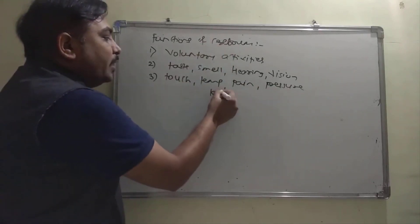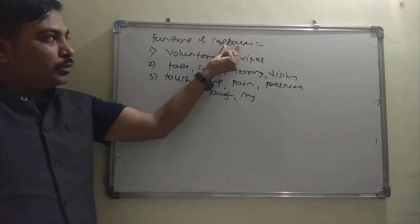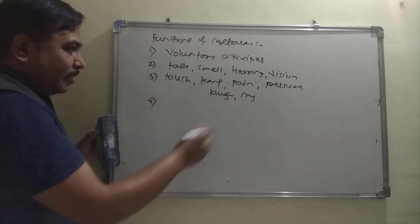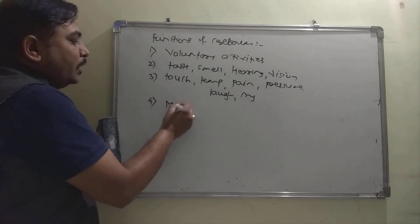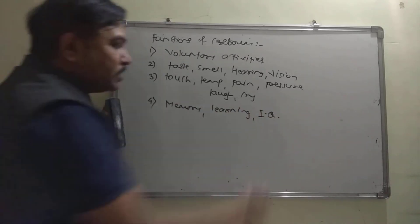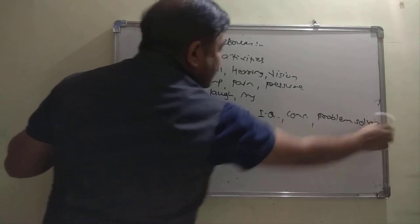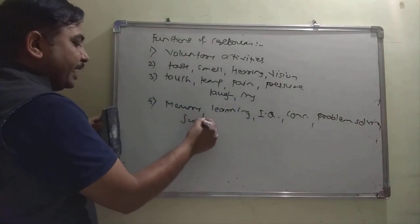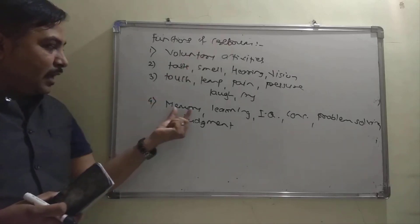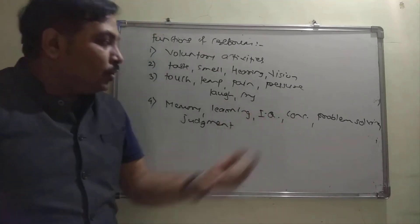The cerebrum also controls emotions like laughing and crying. Furthermore, it controls memory, the process of learning, intelligence, and concentration.